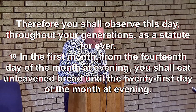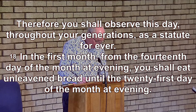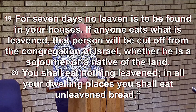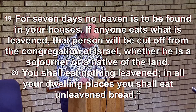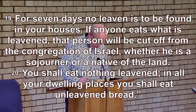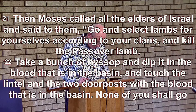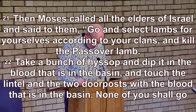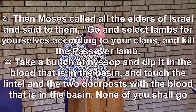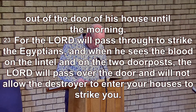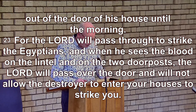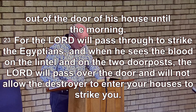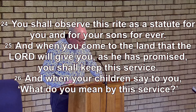In the first month, from the fourteenth day at evening, you shall eat unleavened bread until the twenty-first day of the month at evening. For seven days no leaven is to be found in your houses. You shall eat nothing leavened; in all your dwelling places you shall eat unleavened bread. Then Moses called all the elders of Israel and said: Go and select lambs for yourselves according to your clans and kill the Passover lamb. Take a bunch of hyssop and dip it in the blood in the basin, and touch the lintel and two doorposts with the blood. None of you shall go out of the door of his house until morning. For the Lord will pass through to strike the Egyptians, but when he sees the blood on the lintel and the two doorposts, the Lord will pass over the door and will not allow the destroyer to enter your houses to strike you.